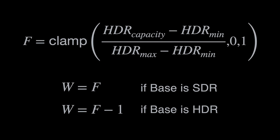Once you have the HDR capacity of the current display, you can compute this fractional value f between 0 and 1, using the minimum and maximum HDR capacity values from the gain map metadata. This basically gives us a measure of where we are within the displayable range that the gain map was intended to be used for.